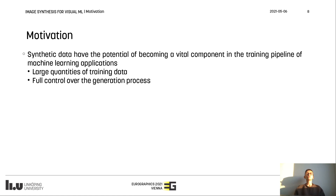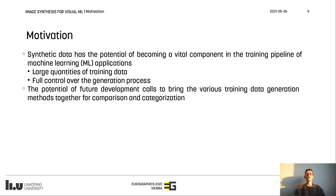Synthetic data have the potential to become a vital component in the training pipeline of machine learning applications, as they can generate large quantities of fully annotated training data and come with full control during the generation process. This control is vital for content variety and in order to formulate the best data distribution. Given this, and recognizing the potential of future development, this survey brings together the various generation methods developed over the past decade for categorization and comparison.